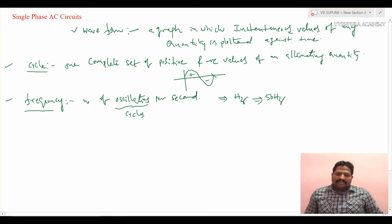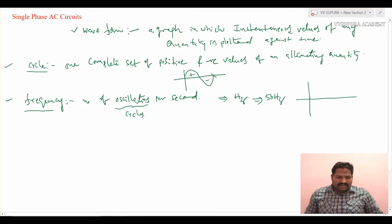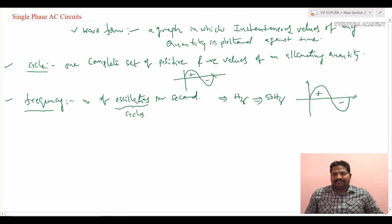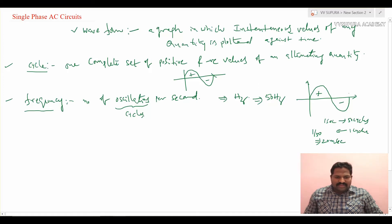Whenever we hear 50 hertz, we should understand that there are 50 cycles per second — that means 50 complete cycles, each having one positive and one negative half. For one second there are 50 cycles, so the time for one cycle is 1 divided by 50, which is approximately 20 milliseconds. So for one complete sinusoidal cycle it takes 20 milliseconds, and for a half cycle it will be 10 milliseconds.